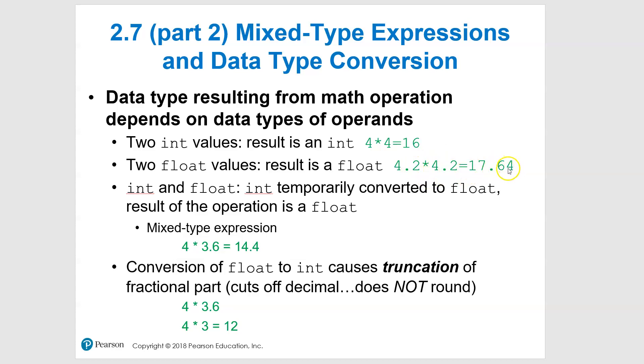So we've got that in there. There's a float there. Now if you get to a mixed-type expression where you have an int and a float, the int is temporarily converted while it's doing this, and the result is a float. That's the most important part.